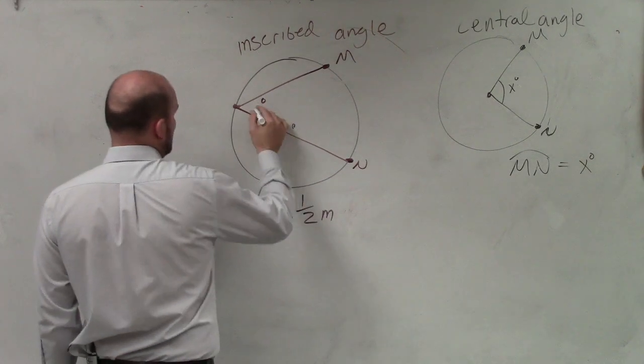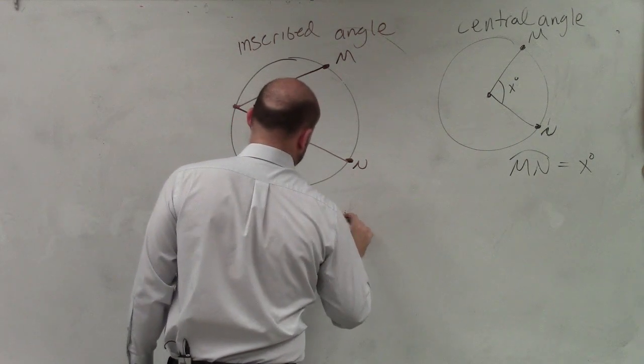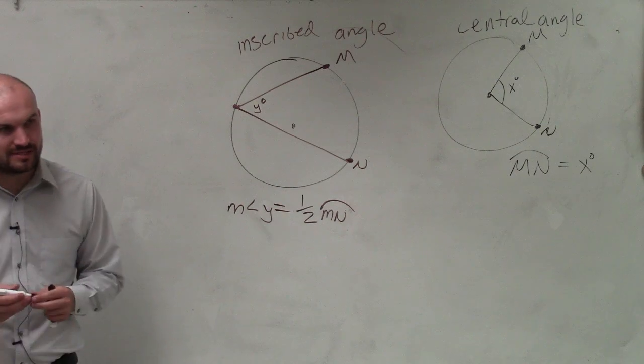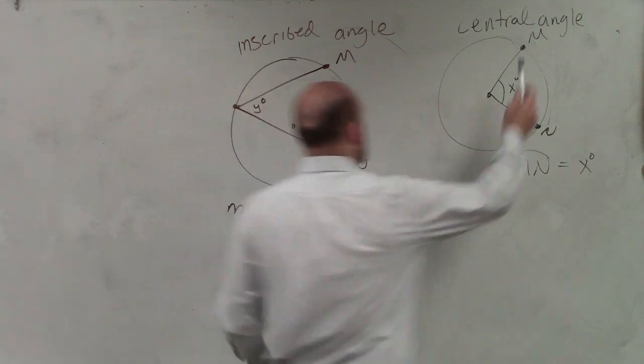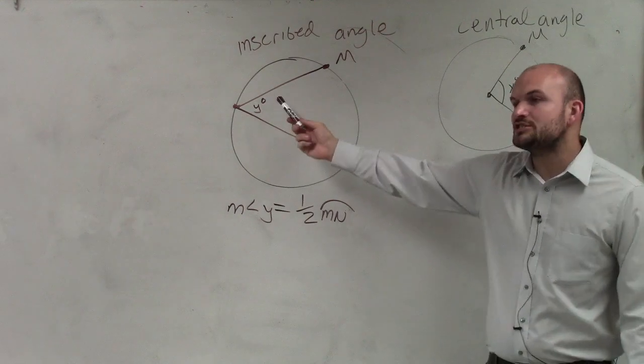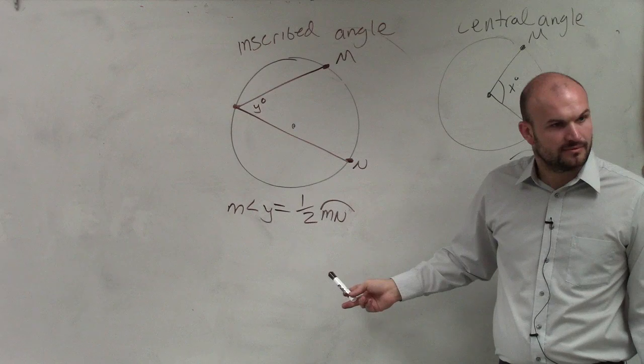Let's use a different variable, y. The inscribed angle is actually one-half of the arc measurement. So if the arc from M to N has measurement x, the inscribed angle is one-half of that value.